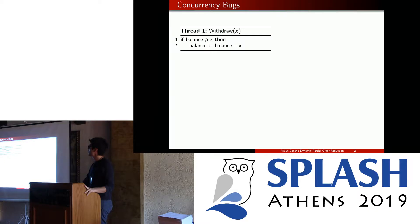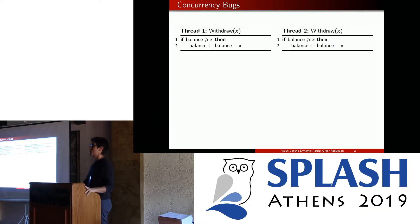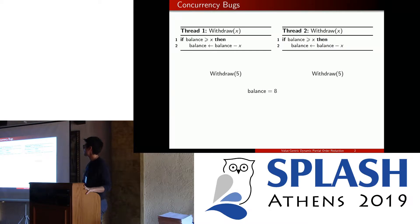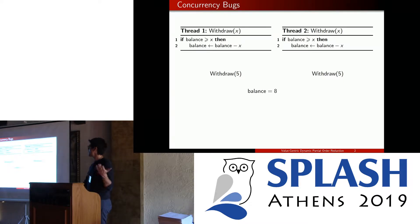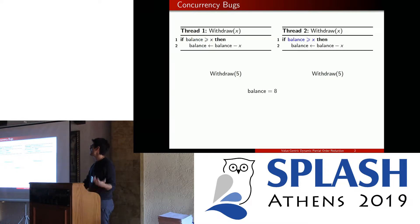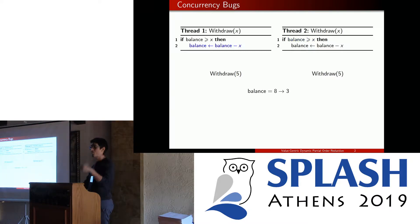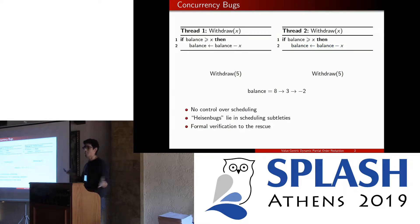In fact, you can run into trouble if you have two versions of these running in parallel. You can think of a simple example where you start with a balance of eight and try to withdraw five on each side. A possible execution can go like this: first you check whether the balance is enough on the left — it is, so the check goes through. You make the same check on the right, it goes through again. Then you proceed with withdrawing five on each side and you end up with a negative balance. This should clearly not happen.